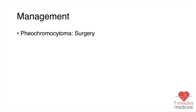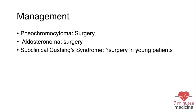For definitive management: pheochromocytoma is treated with surgery. Aldosteronoma — a mass producing aldosterone — is treated with surgery. Subclinical Cushing syndrome management depends on discussion between the provider and the patient regarding timing of surgery, as it is more of an expert opinion decision. Adrenal cancer is definitely treated with surgery.